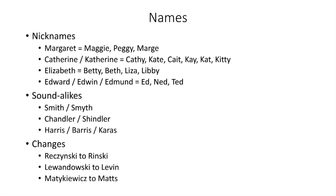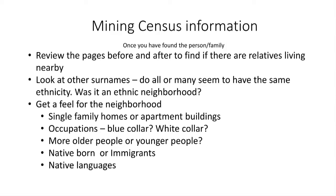After you've looked at the facts on the census page, take a look at more information and see what you can infer. Check the pages before and after the person you found. Are there people with the same name nearby — relatives? What was the neighborhood life like? Were they single-family homes, apartment buildings, boarding houses? Were multiple generations living together? Did surnames and birth places indicate a predominant nationality?